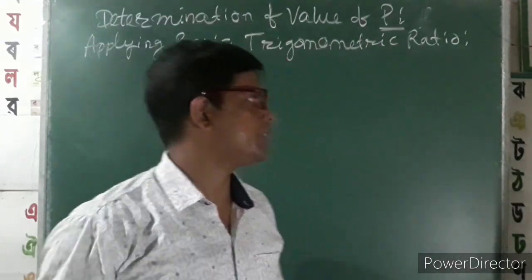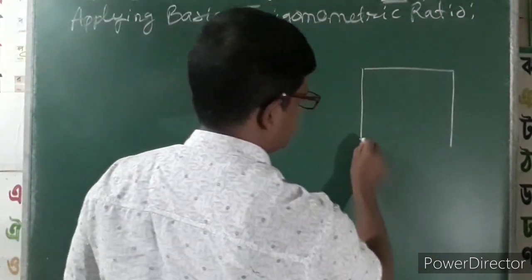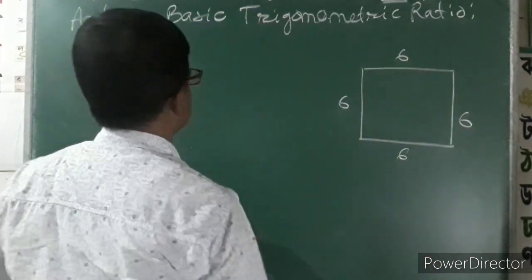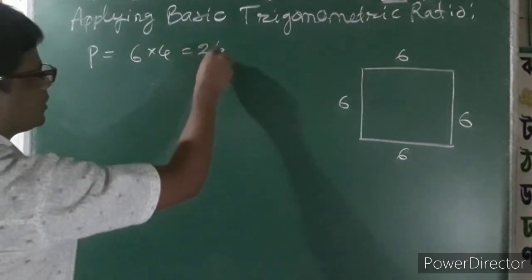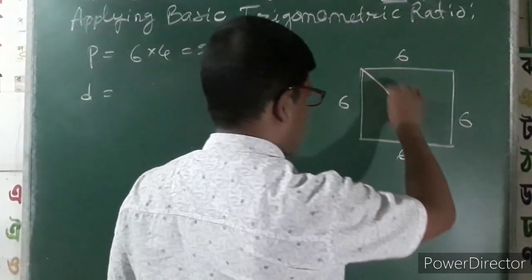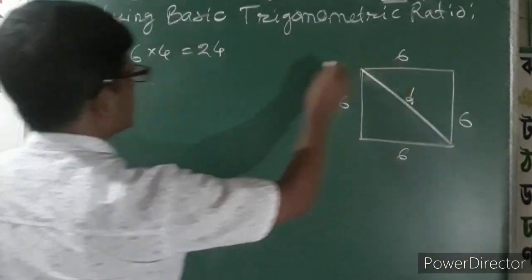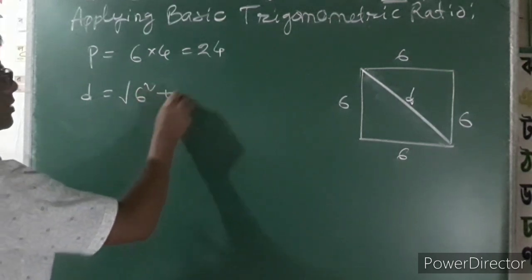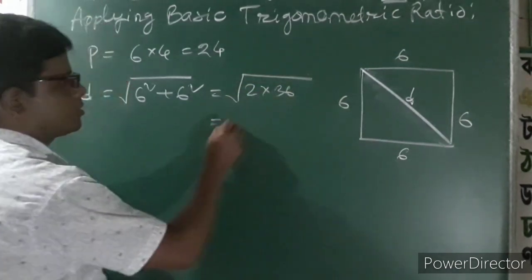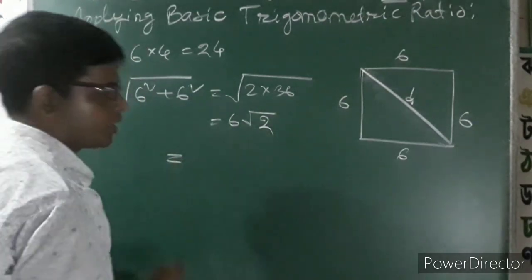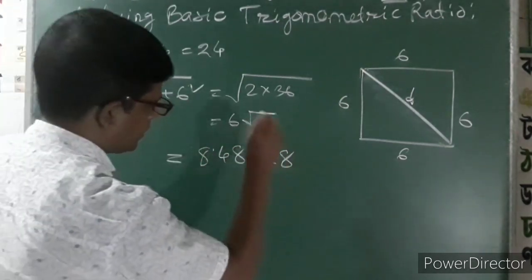Let's first compare the perimeter and the diagonals of a regular polygon — that is, a square. This is one square; each side is 6 units. Its perimeter is 6 times 4, which is 24. And the diagonal, applying the Pythagorean theorem: diagonal D is the root of 6 squared plus 6 squared, so root of 2 times 36, which is 6 root 2. Using a calculator, that gives 8.48528...